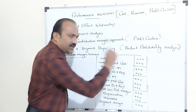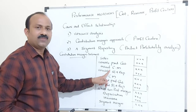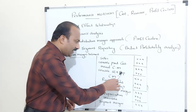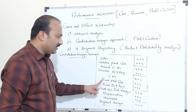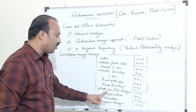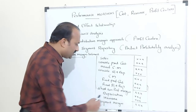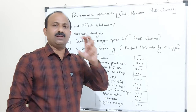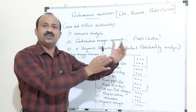Sales minus variable production costs gives you the manufacturing contribution margin. Minus variable selling and administrative expenses gives you the contribution margin. Minus fixed production cost and fixed selling and administrative cost gives you the short run profit margin. Minus depreciation and insurance gives you the segment margin. Segment reporting is based on a separate unit of the organization.